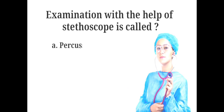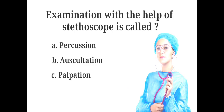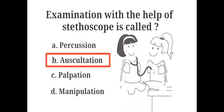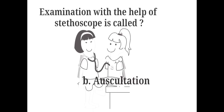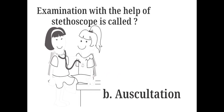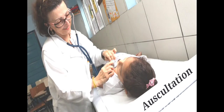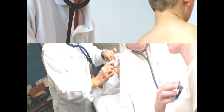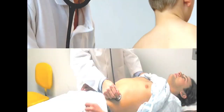Examination with the help of a stethoscope is called: A. Percussion, B. Auscultation, C. Palpation, D. Manipulation. The answer is B. Auscultation. Auscultation is the examination done with the help of a stethoscope. Listening to internal sounds of the body using a stethoscope is called auscultation, and is done usually to listen to heart sounds, breath sounds and bowel sounds.